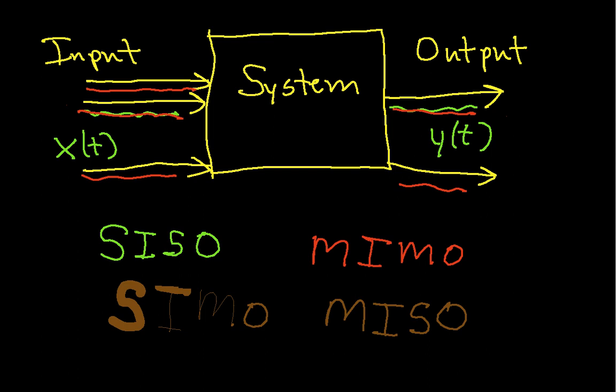For most of the things that happen in an introductory course in signals and systems, we assume a single input, single output system, because most of the analysis is fairly straightforward, at least relatively.